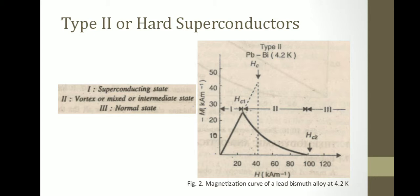So this is the first region which we have shown to be the superconducting state, and the second phase is the vortex and mixed or intermediate state, and the third phase is the normal state. So for the critical magnetic field, two values now exist: Hc1 and Hc2. Between Hc1 and Hc2, it's not the normal conducting state but a vortex state or intermediate state.